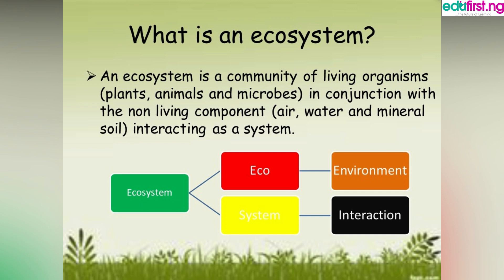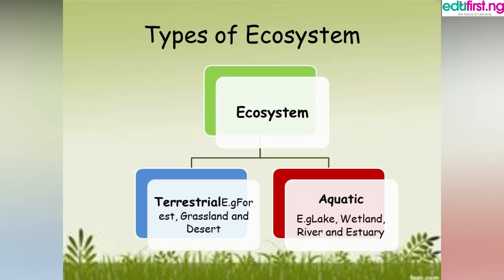There are two types of ecosystem: the terrestrial ecosystem and the aquatic ecosystem. Examples of terrestrial ecosystems include the forest, grassland, and desert — land-based environments. For the aquatic ecosystem, which is water-based, examples include lakes, wetlands, rivers, seas, oceans, and so on.